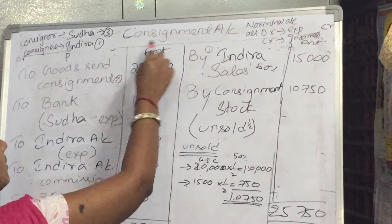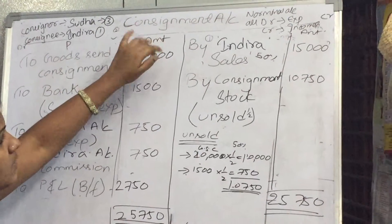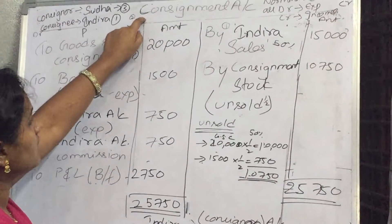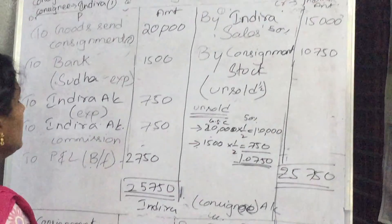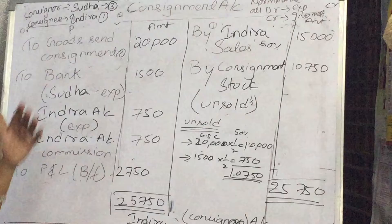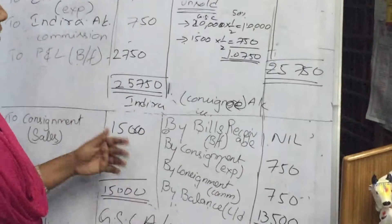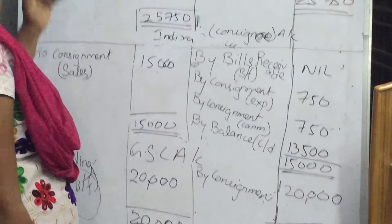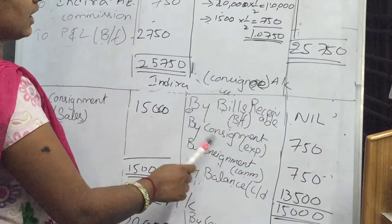For the journal entry, whatever is on the credit side comes first. The entry is: Indra Sales Account debit, to Consignment Account — being unsold stock. These are the ledger accounts in the books of Suda — three ledger accounts. In Indra's books, only one account exists: the Suda account. Whatever is on the debit side transfers to credit, and credit side transfers to debit. In the Suda account, bills receivable becomes bills payable. Thank you.